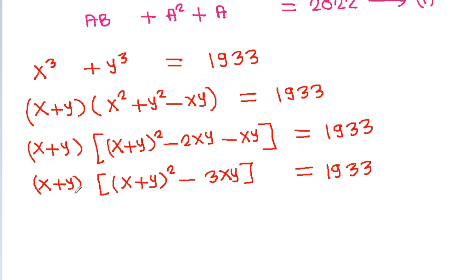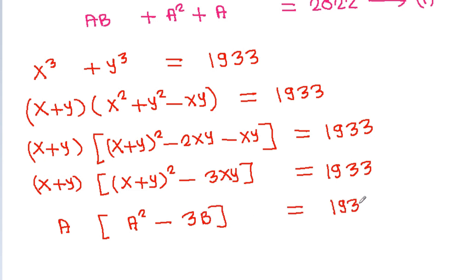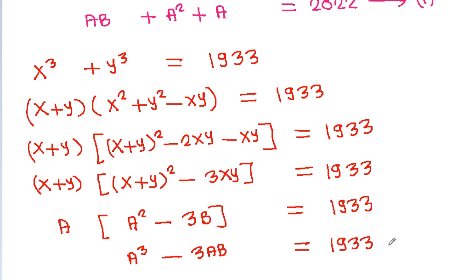Substituting a for x plus y and b for xy: x cubed plus y cubed equals a times a squared minus 3b, which gives a cubed minus 3ab equal to 1933. This is equation 2.